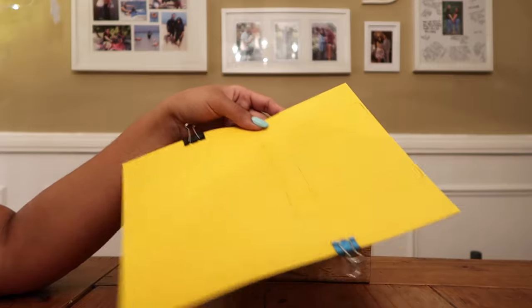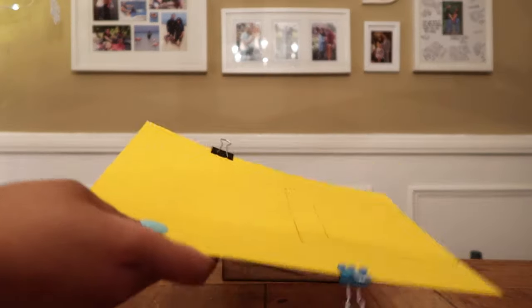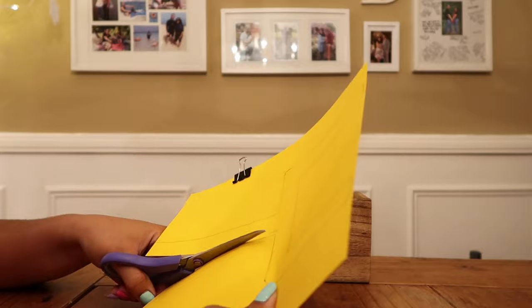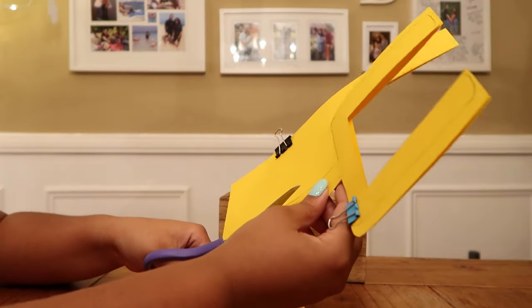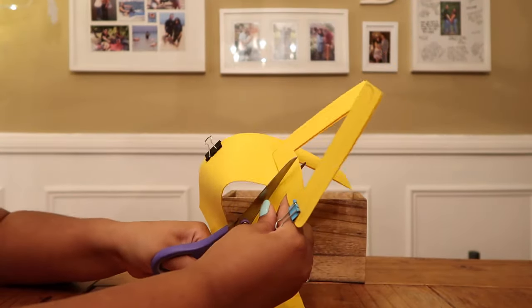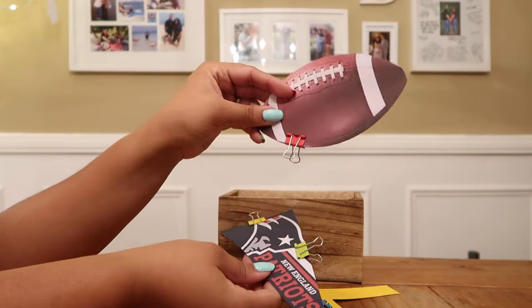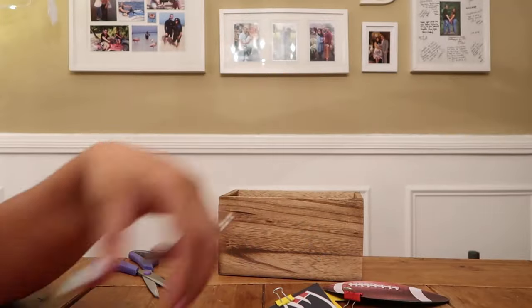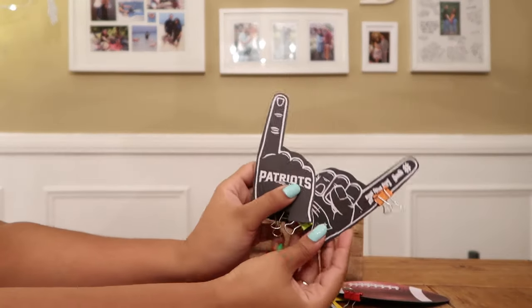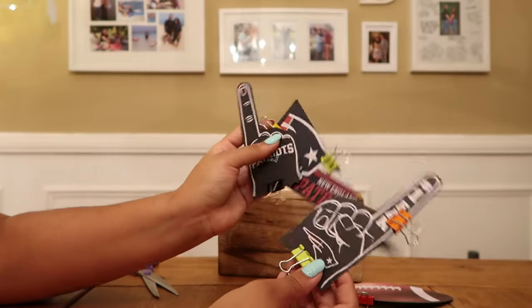I also cut out some images that are printed from Google, so this football, this Patriots banner, and some paper foam fingers. Basically what we're going to do is repeat the same steps as we did for our football players in the beginning of the video.